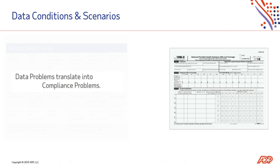By missing an offer, the Form 1095C for the employee may be incorrect or may not be created at all. In addition, the missing or incorrect Form 1095C may result in an FEIN not meeting the 95% threshold, placing the organization at risk by creating incorrect Forms 1094C and 1095C for transmission to the IRS. As you can see from our quick example, data problems can translate into compliance problems.